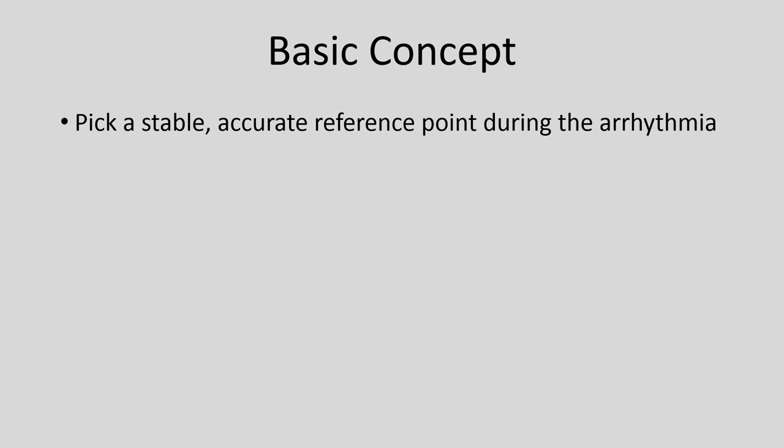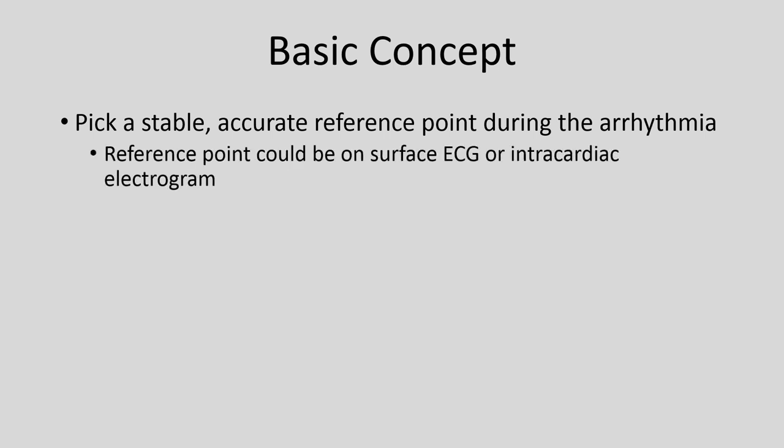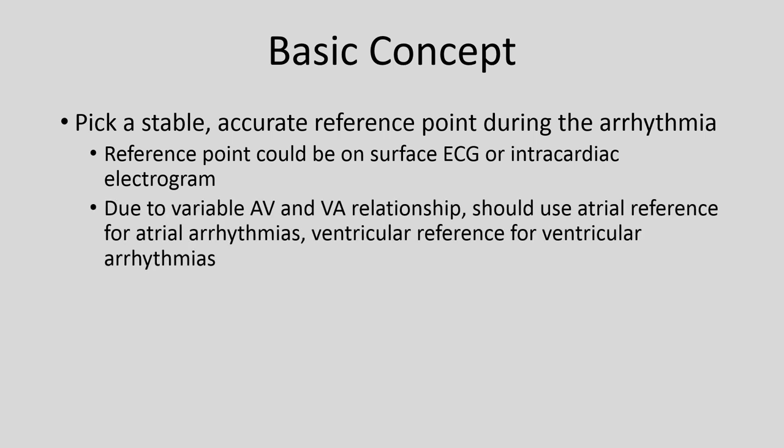Here's the basic concept of activation mapping. You pick a stable, accurate, consistent reference point during an arrhythmia in the electrophysiology lab. That point can be on the surface EKG — part of the QRS — or it could be an intracardiac electrogram. Because of the AV node and variation in timing between the atrium and ventricle, you should use a reference point in the same chamber as the arrhythmia you're mapping — an atrial reference for atrial arrhythmias and a ventricular reference for ventricular arrhythmias.